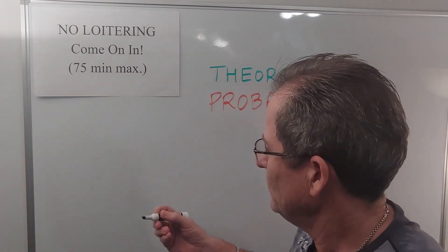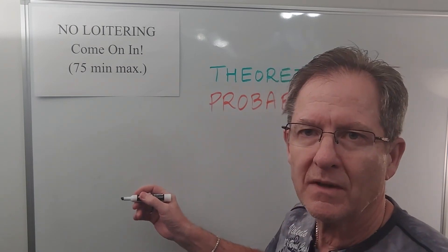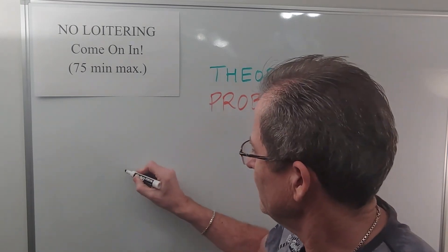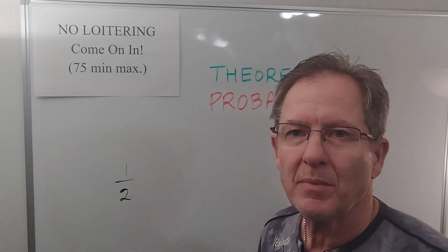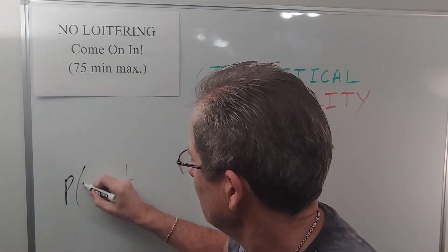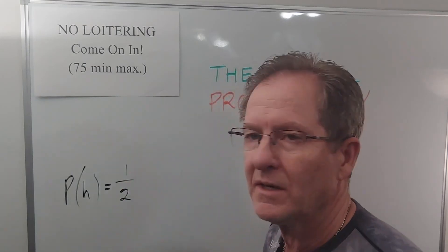Let's say you're flipping a coin and you want to get the theoretical probability of getting heads. Well, there's only one heads on the coin and two possibilities, so the probability of getting heads is 1 out of 2.